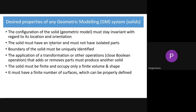Whatever geometric modeling system you are using, it should be compatible with different transformation operations and other standard algebraic operations, and it should operate as such. Depending on whatever operation you are performing, it must produce the desired type of output. It should be definitely finite only — whatever is the solid model, it cannot occupy an indefinite volume. It should have finite volume, and a finite number of surfaces which are properly defined. These are some of the desired properties for any kind of geometric model.